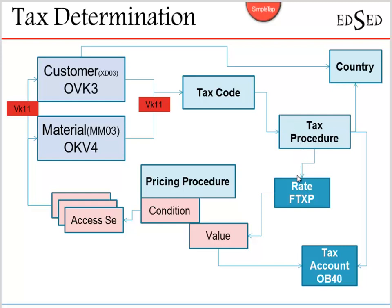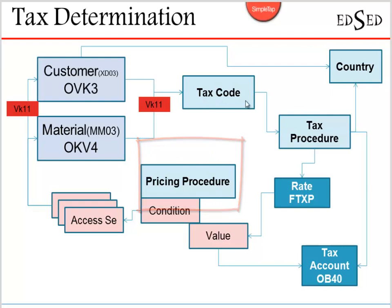Based on the tax code, the tax rate that is maintained is triggered. From the SD perspective, the pricing procedure contains all the conditions for pricing, including some tax conditions. The tax rate is populated through the tax procedure into the pricing procedure conditions which hold the tax value.